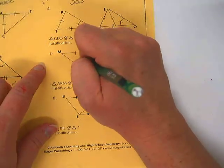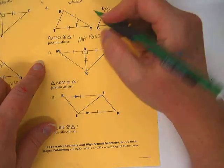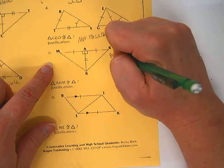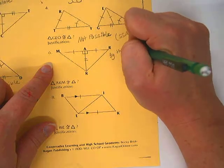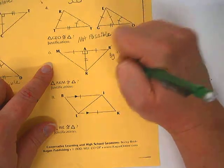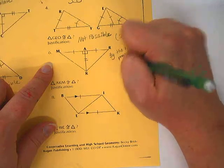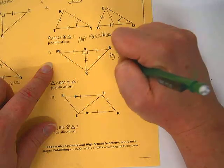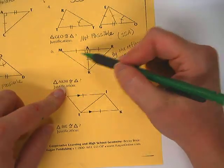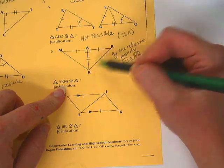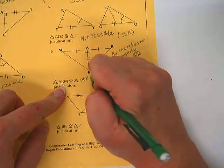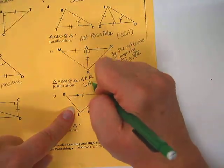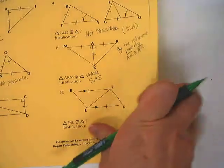Okay, number six involves a property we learned a long time ago called the reflexive property. The reflexive property says that something is congruent to itself. So by the reflexive property, AK is congruent to AK because it's exactly the same line for both triangles. So AKM is congruent to AKR, and the reason is side, angle, side.